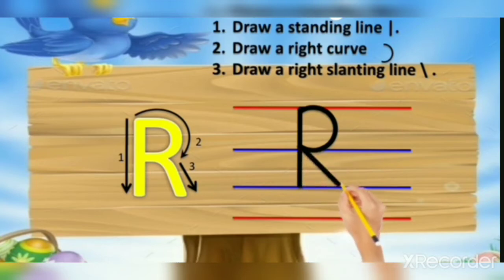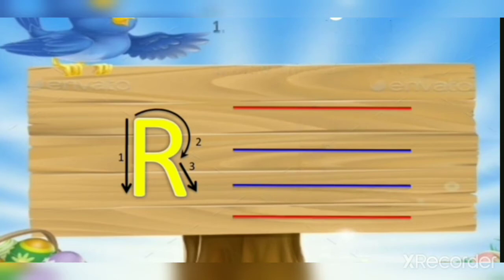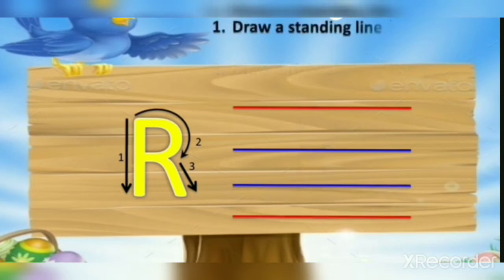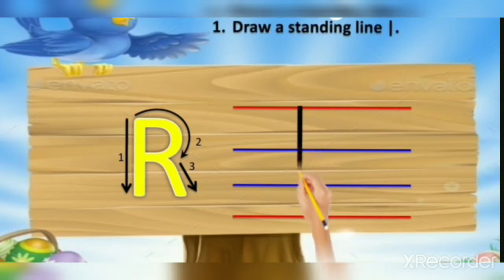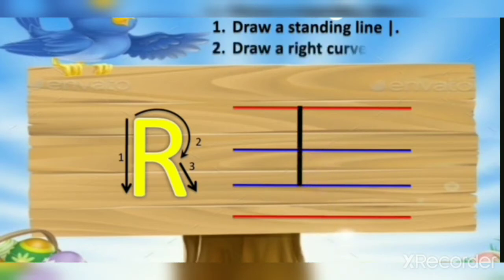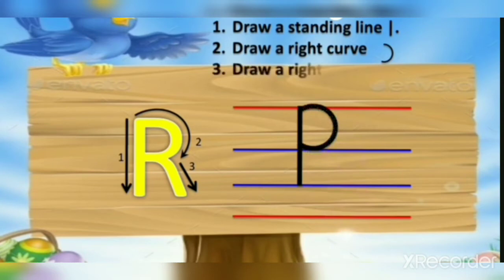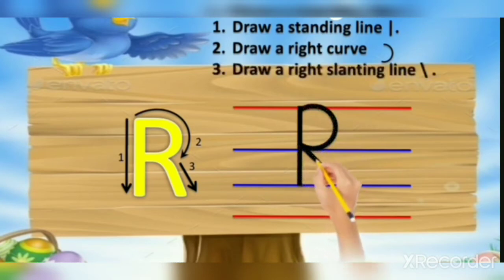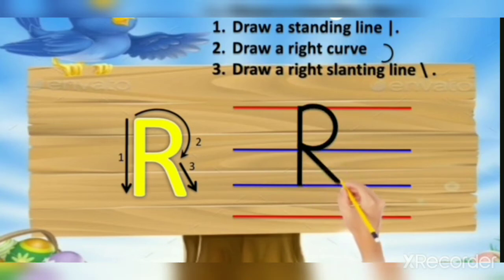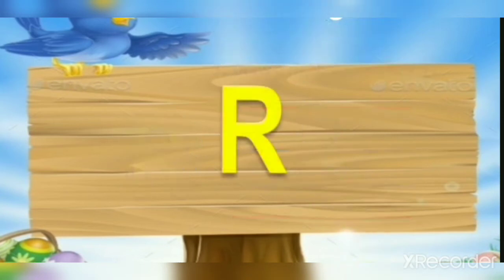Once again, let's learn how to write capital letter R in the four-lines book. First, draw a standing line from the red line to the blue line. Step 2 is to draw a right curve from the red line to the blue line. The third step is to draw a right slanting line in between the two blue lines.